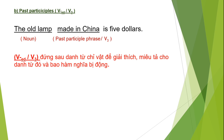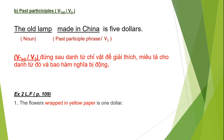Cũng như phần A, cô sẽ làm ví dụ ở bài tập số 2 trong phần language focus trang 109. Câu thứ nhất tả bông hoa: 'The flower wrapped in yellow paper is 1 dollar' — những bông hoa được gói vào giấy màu vàng thì giá 1 đô. Cụm từ 'wrapped in yellow paper' bổ nghĩa cho vật là 'the flower.' Động từ 'wrap' có quy tắc nên cô double p và thêm -ed vào.